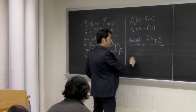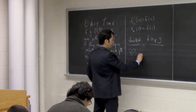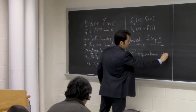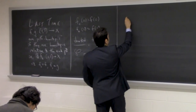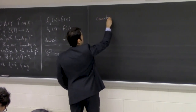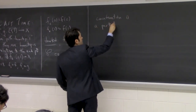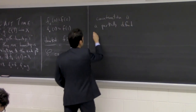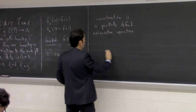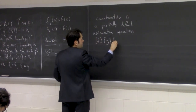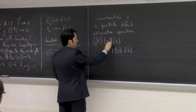Then we talked about how this forms an equivalence relation, and we denote the equivalence classes of paths by curly p. We saw that concatenation is a partially defined associative operation. So whenever it makes sense, taking the product of three paths is independent of how you put parentheses.